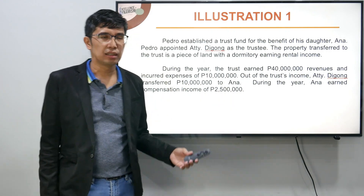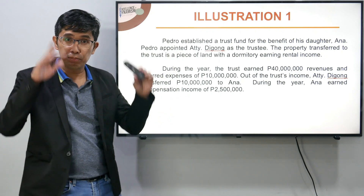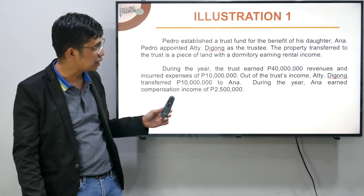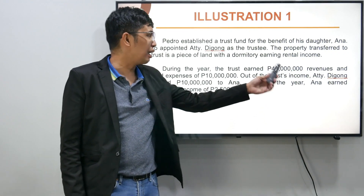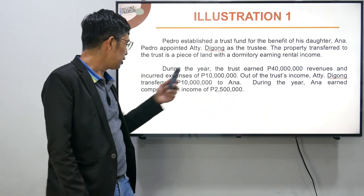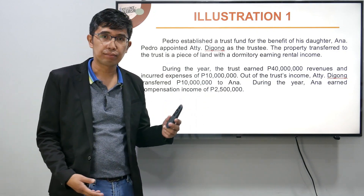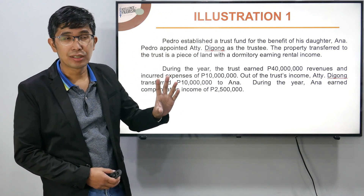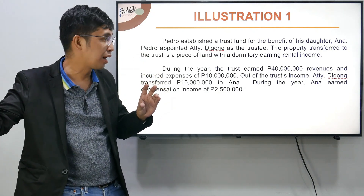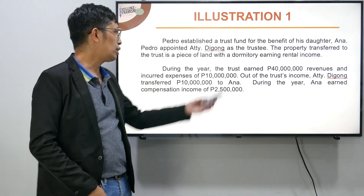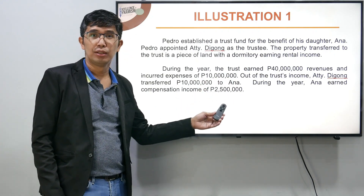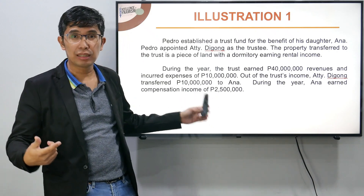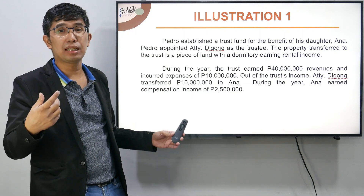During the year, nag-earn yung trust or yung property ng 40 million. Tapos nag-incur ng expenses ng 10 million — so 40 less 10. Pero sabi sa problem, out of the trust income, si attorney ay nag-transfer ng 10 million kay Anna. Kung po-compute mo yung income ni trust: 40 less 10 less 10. Tapos yung 10 na binigay mo kay Anna, dapat irareport ni Anna na income — taxable to her. During the year, Anna earned compensation income of 25 million. Kung ikaw si Anna, ang irareport mong income ay hindi lang 25, kundi 25 ia-add mo yung 10 million na natanggap mo galing sa income ni trust.